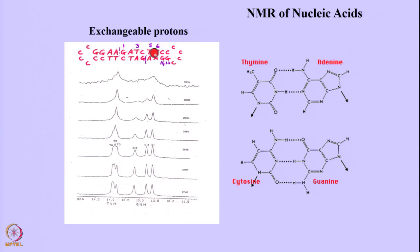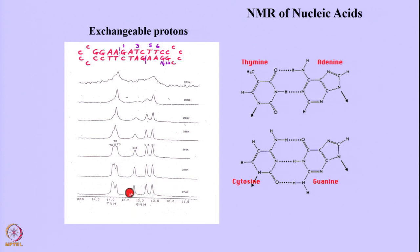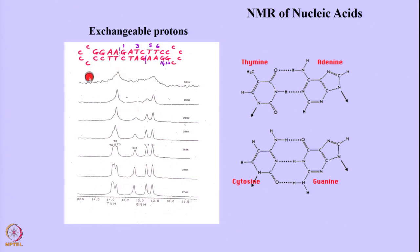Why do we do this temperature dependence? This is the duplex structure. The stability of the duplex is highest in the interior and as you go further towards the ends it becomes fragile — less stable. At the lowest temperature you will see all the signals. You can see 3 G signals here — one G at the base of the loop is less stable.